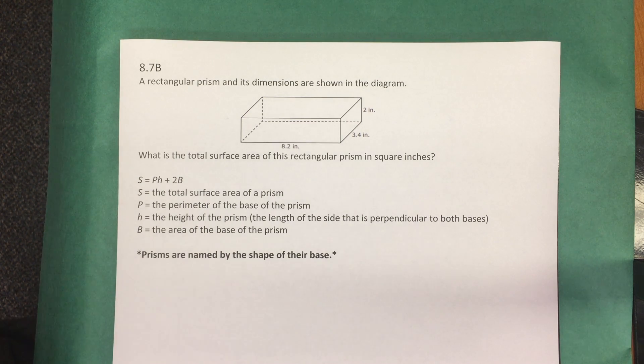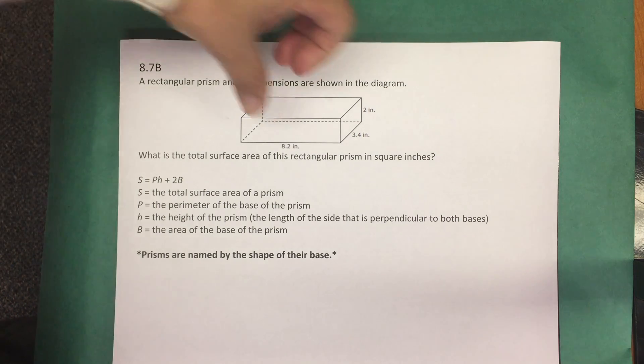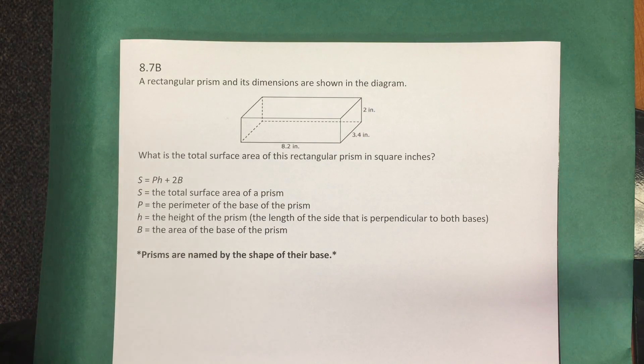An important note is that prisms are named by the shape of the base. So in the problem, since we're told it's a rectangular prism, we know that the base is a rectangle.